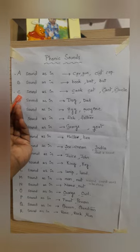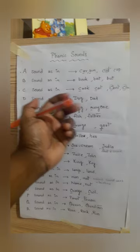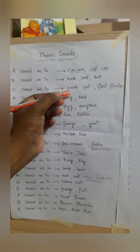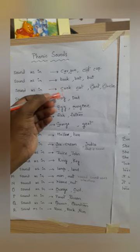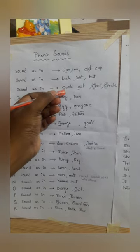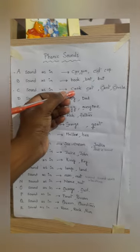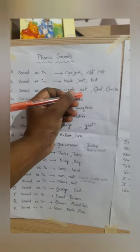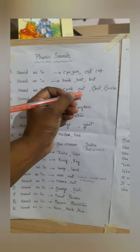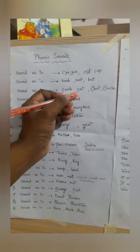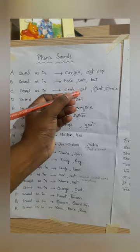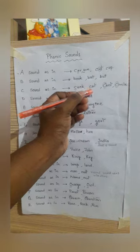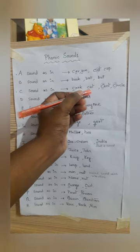Coming to C, it has two sounds. In the word cook — C, O, O, K — the sound of C is 'k'. In the word C, A, T — cat — again the sound of the letter C is 'k'. So it's C, A, T — cat.